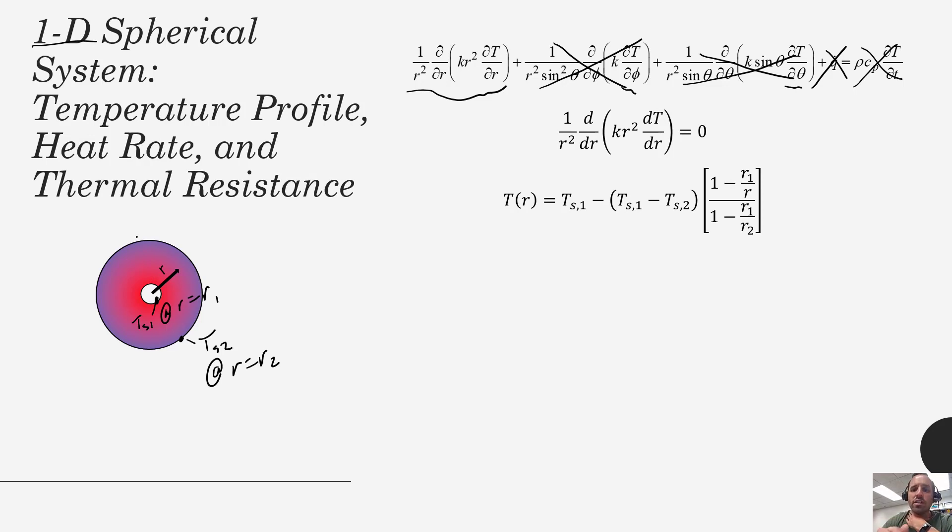If we took this temperature profile and applied Fourier's law we could solve for the flux. So we would get our q double prime as a function of r is equal to minus k dT/dr.